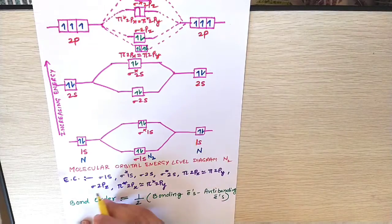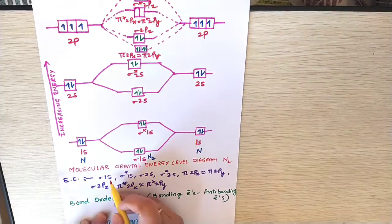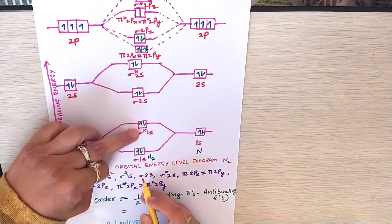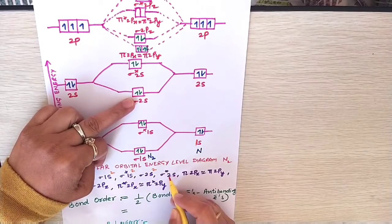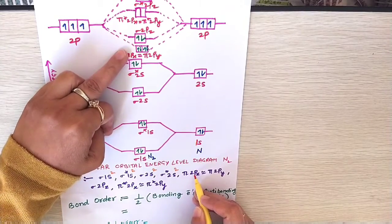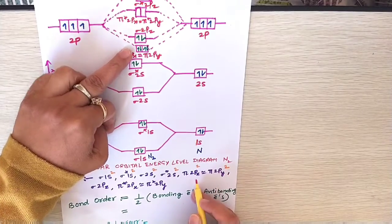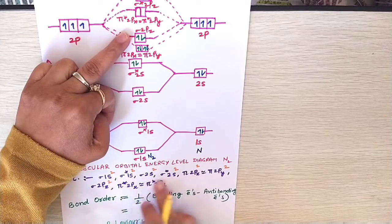How will you fill up the electronic configuration here? Here sigma 1s2, sigma star 1s2, sigma 2s2, sigma star 2s2, pi 2px2 is equal to pi 2py2, sigma 2pz2. Here there are no electrons.